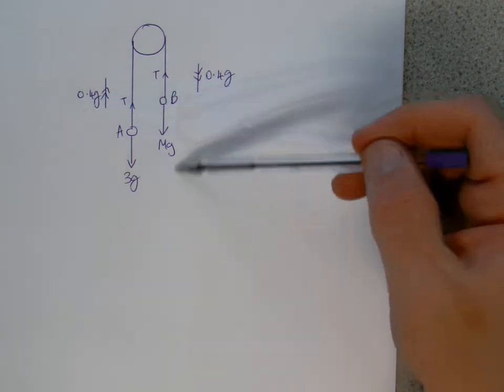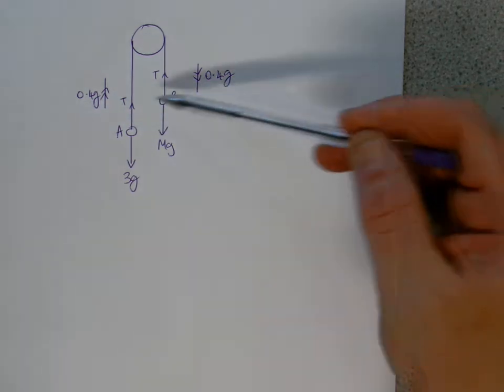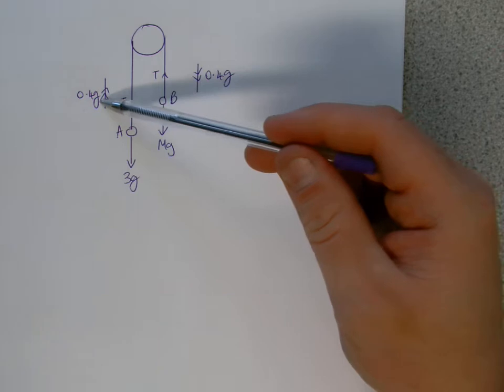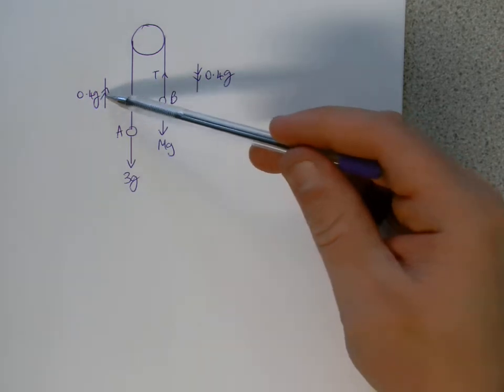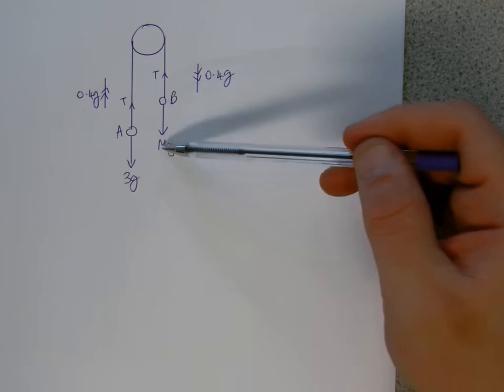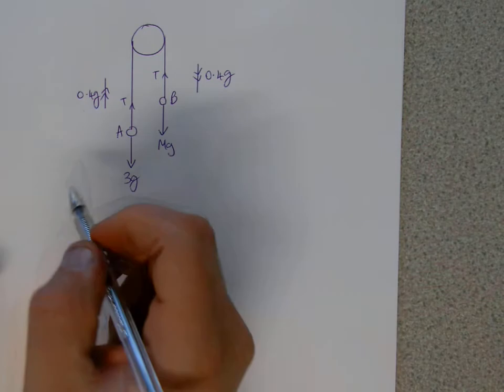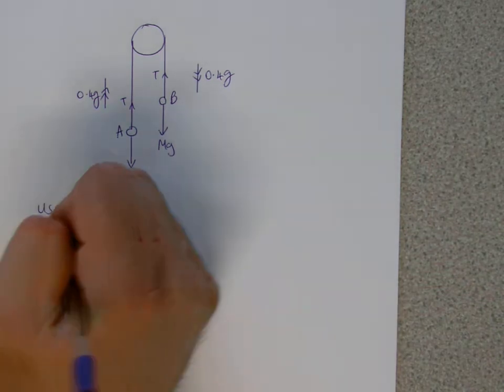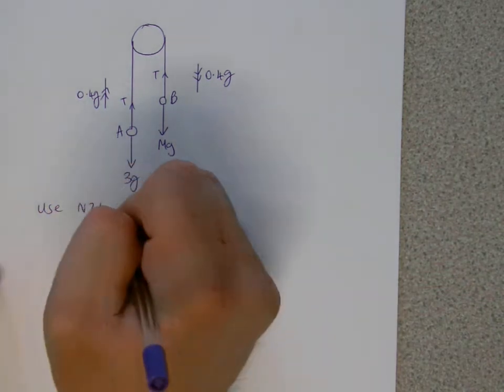So if B is moving with acceleration of 0.4G, it's pulling A, and it'll go at the same acceleration of 0.4G. All right, but it is going to be going this way, this is obviously the heavier weight, and we're asked to work out what that weight is. So if we use Newton's second law, in the direction of motion.